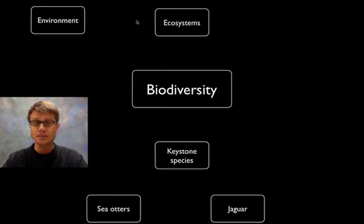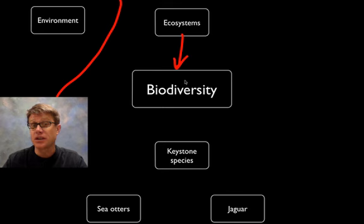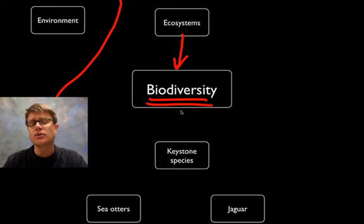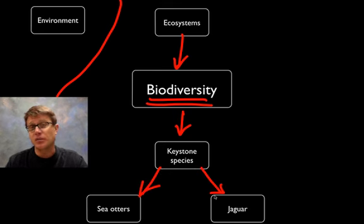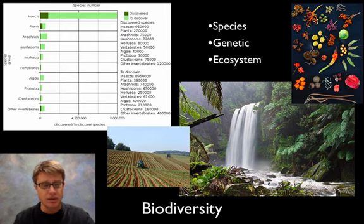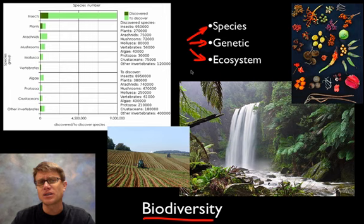Ecosystems are large areas where the climate is the same, but they are constantly in flux with a changing environment. As environments change — especially fast now due to human impacts — it's important that you have biodiversity, or variation in ecosystems. Biodiversity is a pretty big term. We could define it in a couple of different ways: we could be talking about the actual species that we have, the genes that we have, or the ecosystems we have on our planet. Essentially, it's how much variation we have in life.